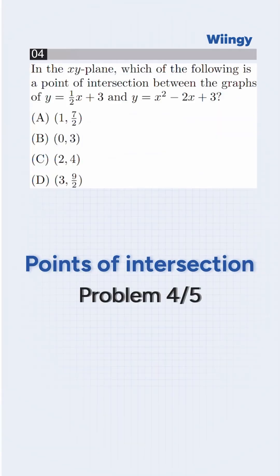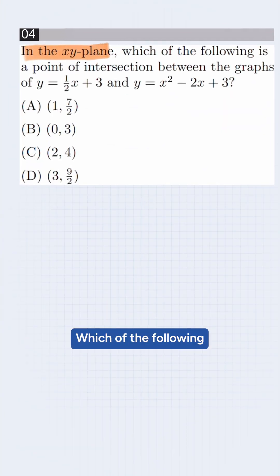Think you can solve this like a pro? Let's find out. The question says, in the xy-plane, which of the following is a point of intersection between the graphs of y = ½x + 3 and y = x² - 2x + 3?